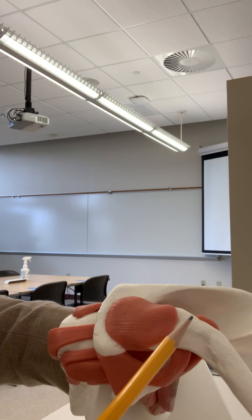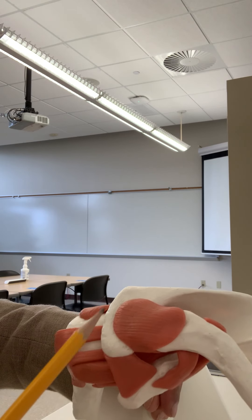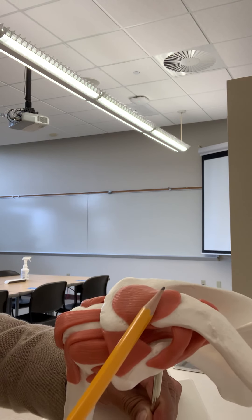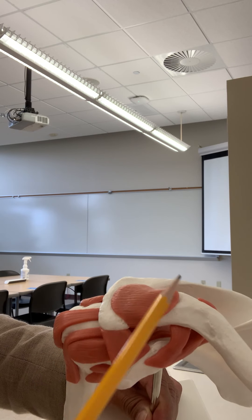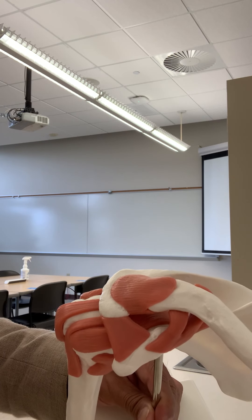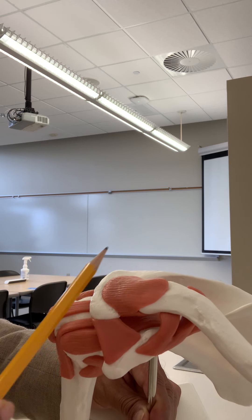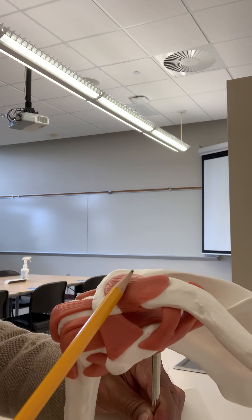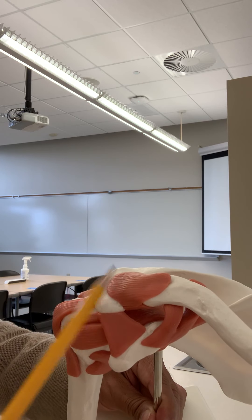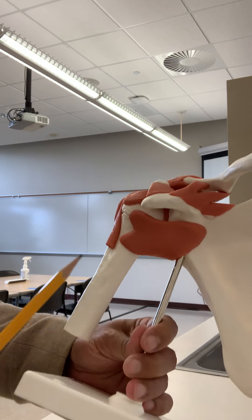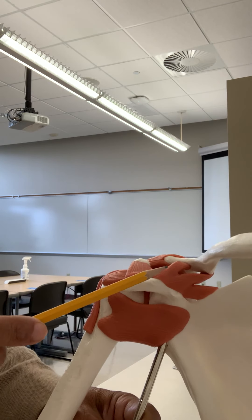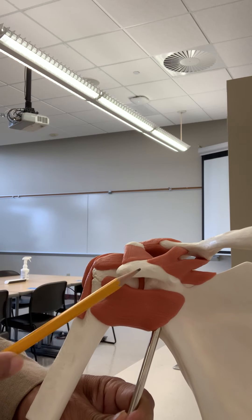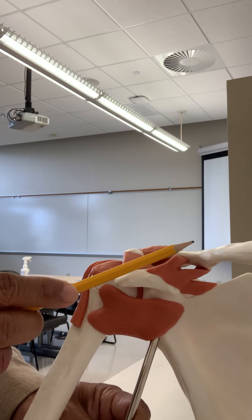This ligament above the shoulder — you see this is the clavicle and this is the acromion of the scapula — is called the acromioclavicular ligament. If you know the names of those bones or their parts, it is very easy: acromion + clavicular ligament.